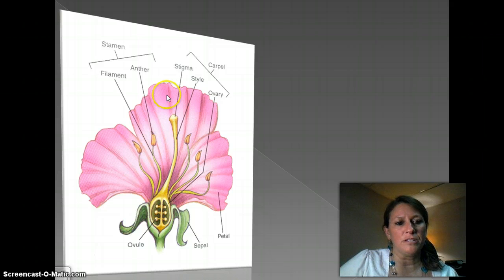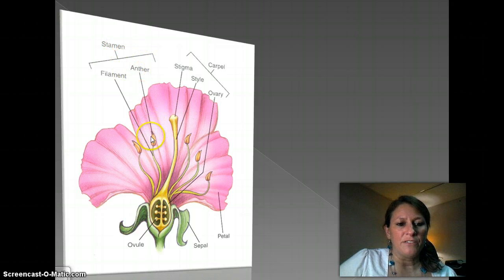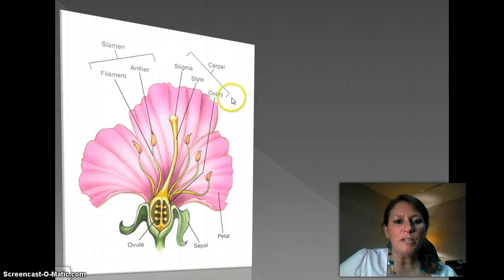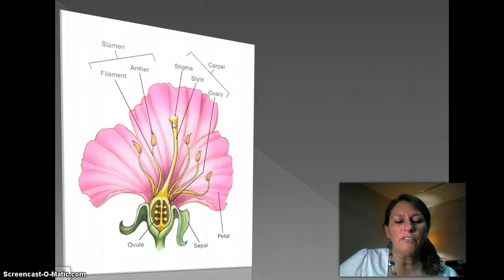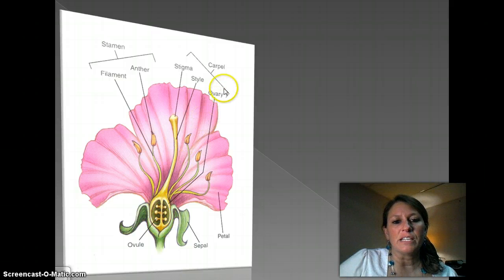First, we have the stamen — that's the male parts. Here's the anther: these little structures at the tip of the stalk called the filament. The anther has all those pollen grains, so if you have allergies, that's what you're allergic to. The female structure, the carpel, is made up of the stigma, which is actually sticky on top. When those pollen grains are flying around, they stick, then fall down this tube called the style, and end up in the ovary to fertilize one of the ovules.